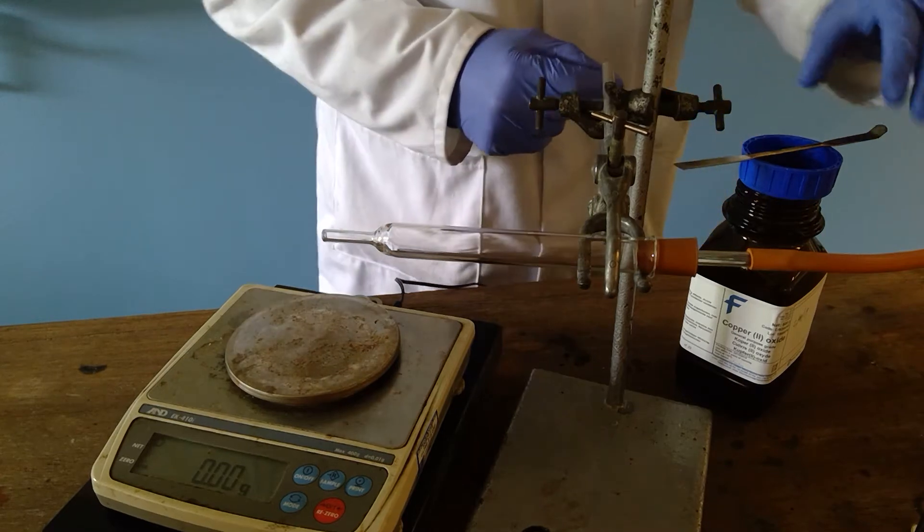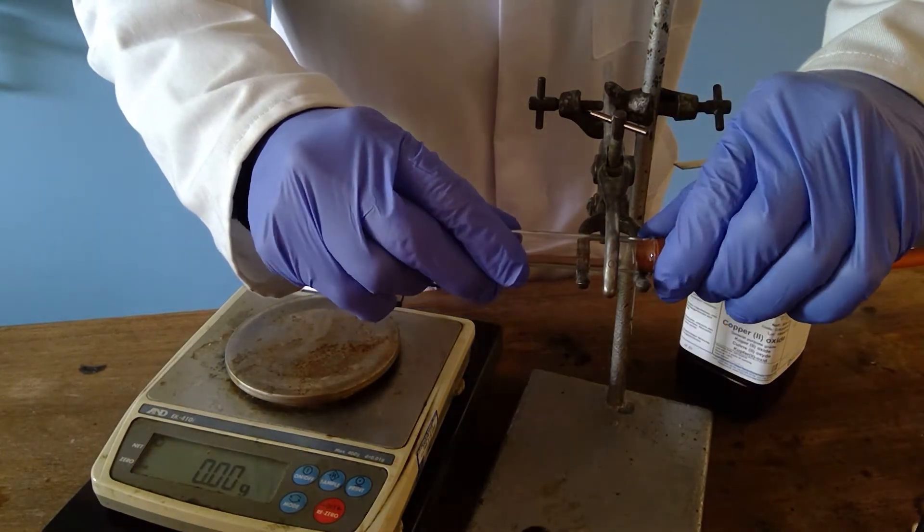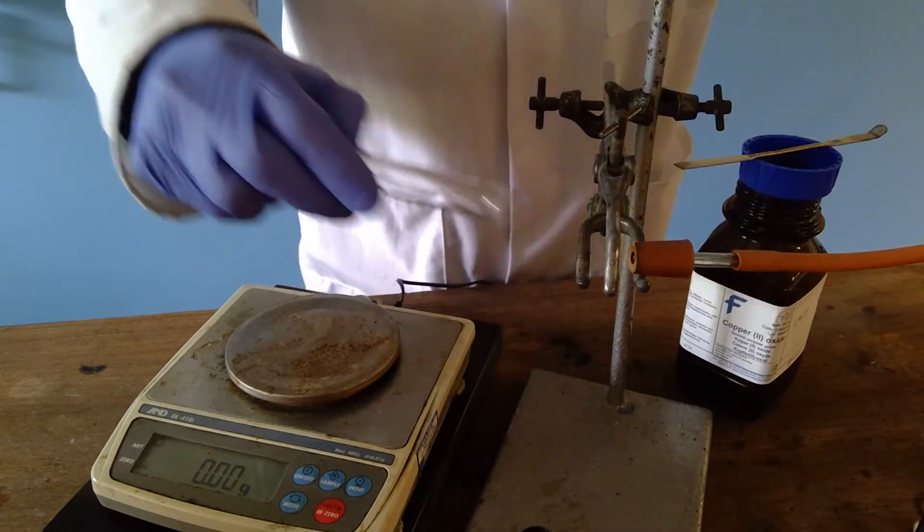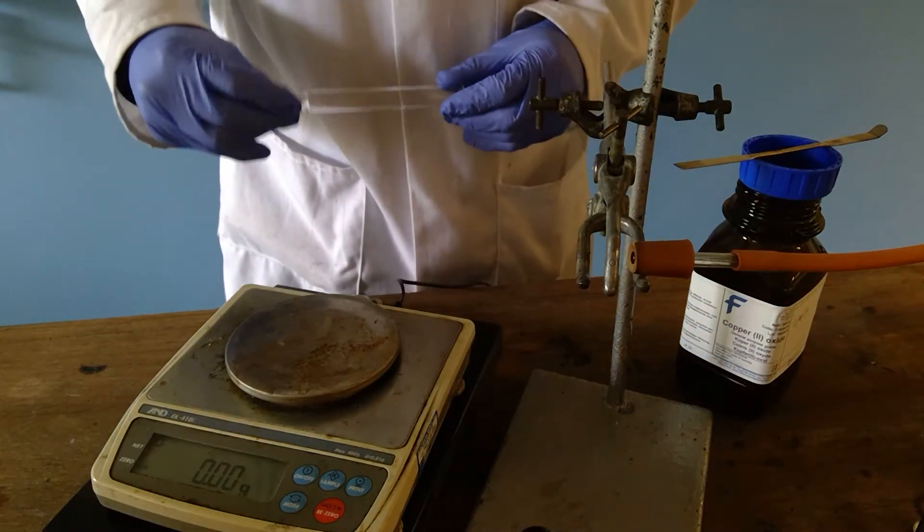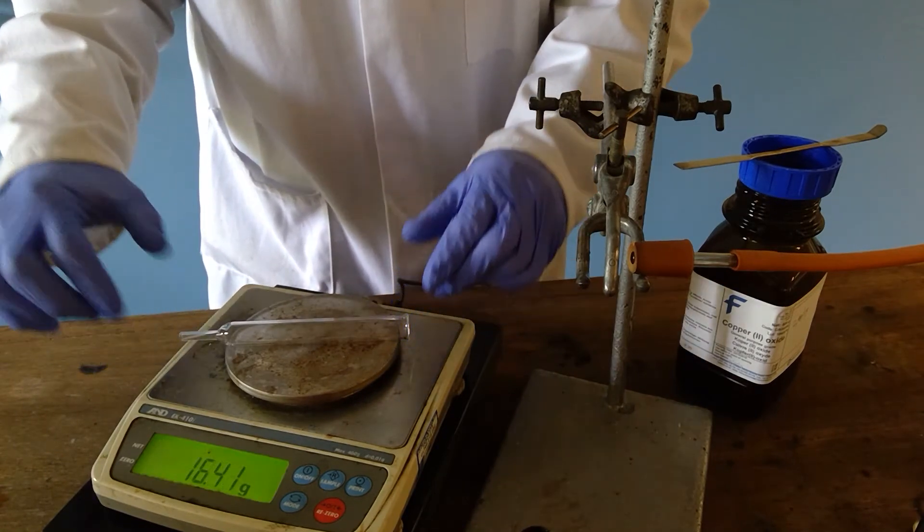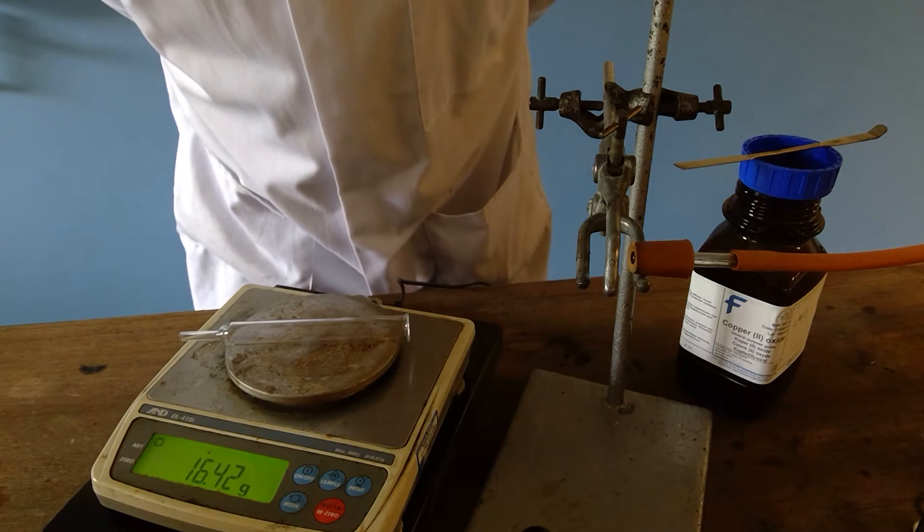The copper oxide is to be placed in this combustion tube. We will weigh the combustion tube first. So if you'd like to take a note of the mass of the combustion tube prior to the experiment.